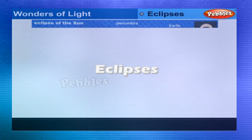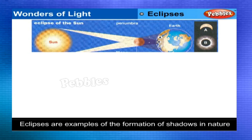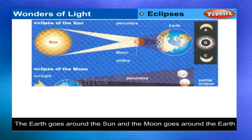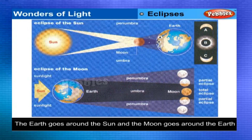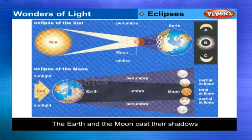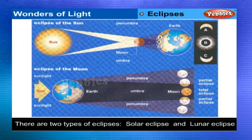Eclipses are examples of the formation of shadows in nature. The earth goes around the sun and the moon goes around the earth. The sun is larger than the earth, and the earth is larger than the moon. The earth and the moon cast their shadows, and these shadows form eclipses. There are two types of eclipses: solar eclipse and lunar eclipse.